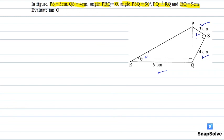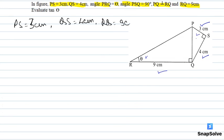Let's note the given values: PS = 3 centimeters, QS = 4 centimeters, RQ = 9 centimeters, and angle PRQ = theta. We have to find the value of tan theta.